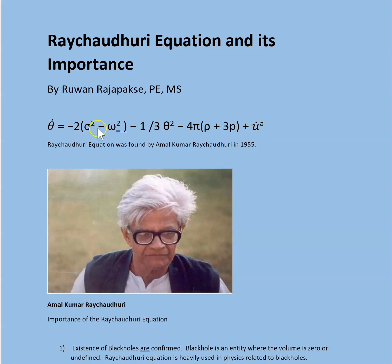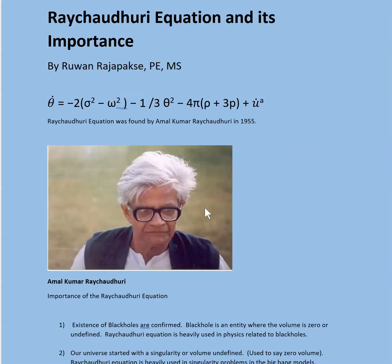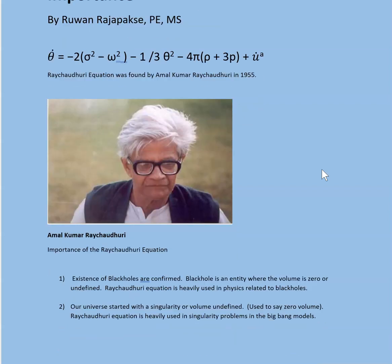So why is this equation important? By the way, this is Amal Kumar Raychaudhuri and he came up with this equation in 1955. Now why is this equation important? This equation is becoming more and more important in black hole physics.